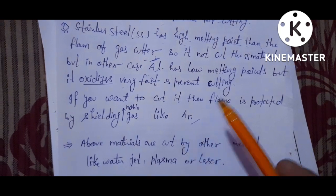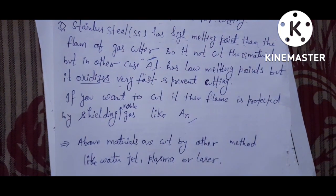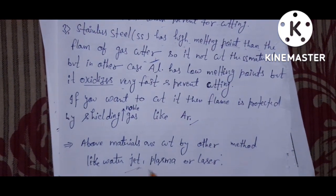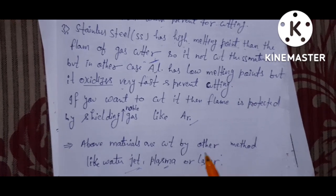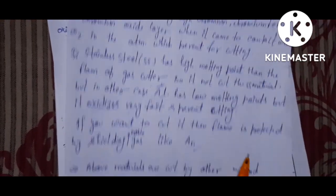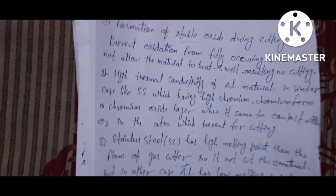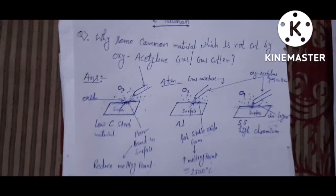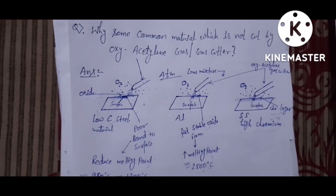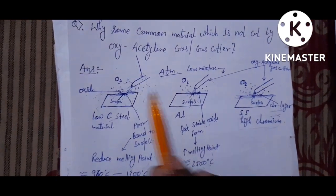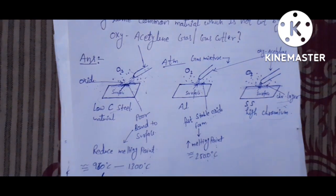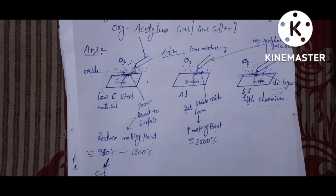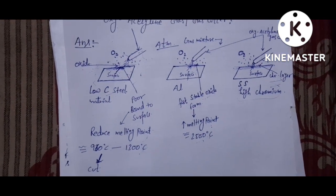Non-ferrous materials like aluminium, copper, and brass are easily cut by water jet, plasma, or laser. That is all about common materials which cannot be cut by oxyacetylene gas cutter. Thank you, I hope you understood it very easily.